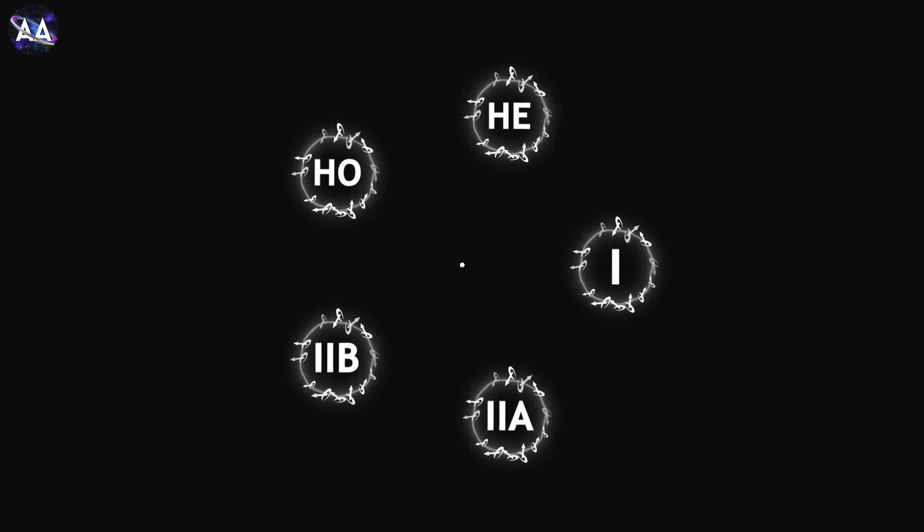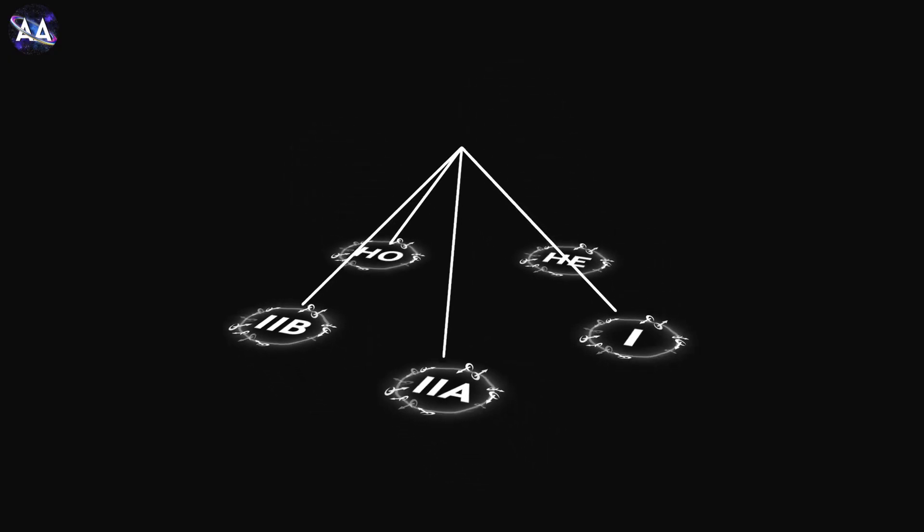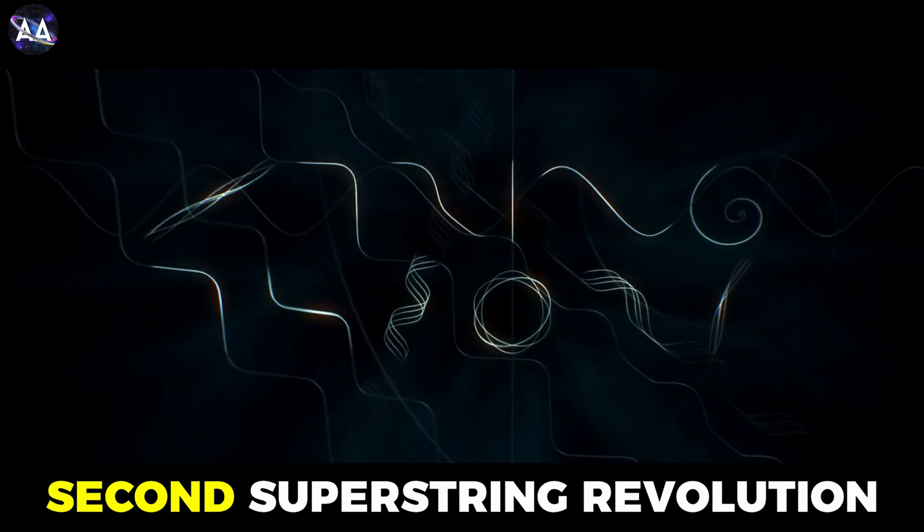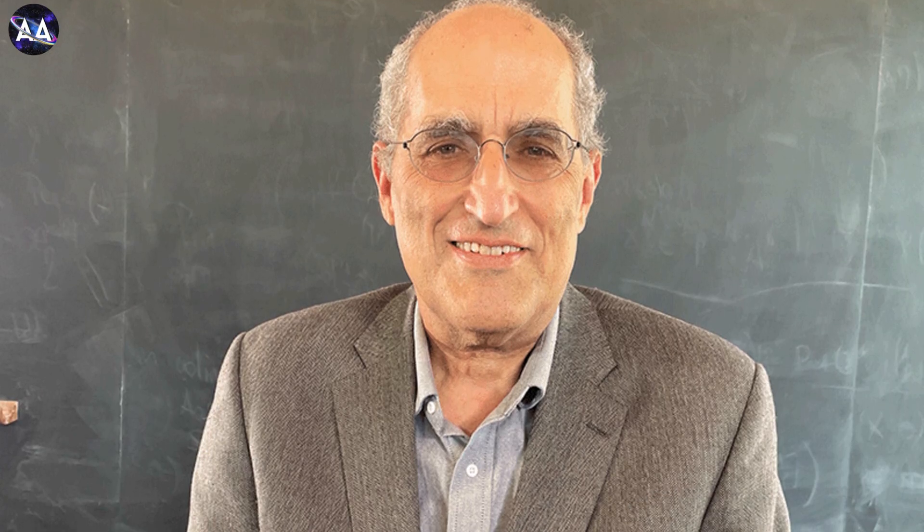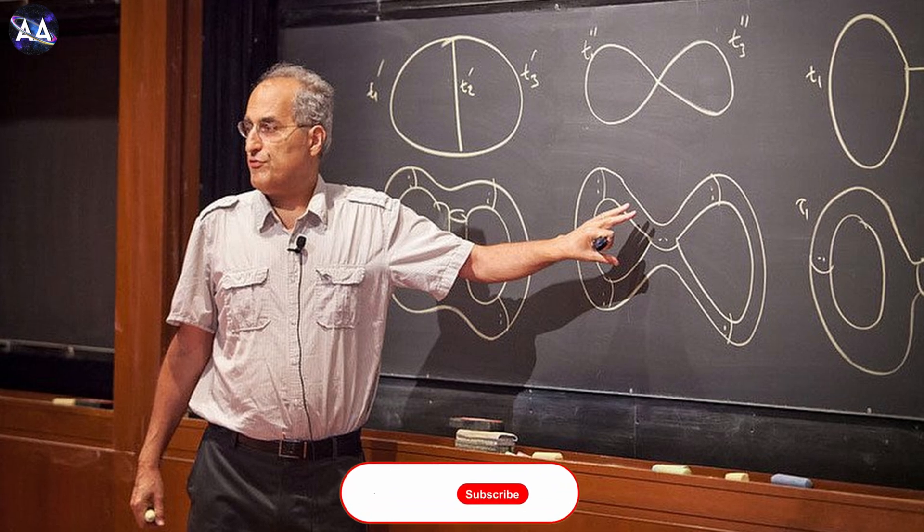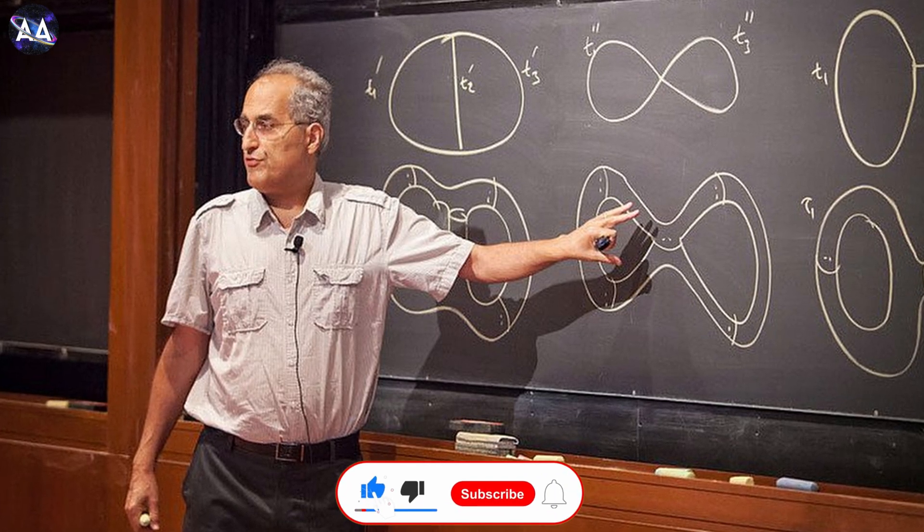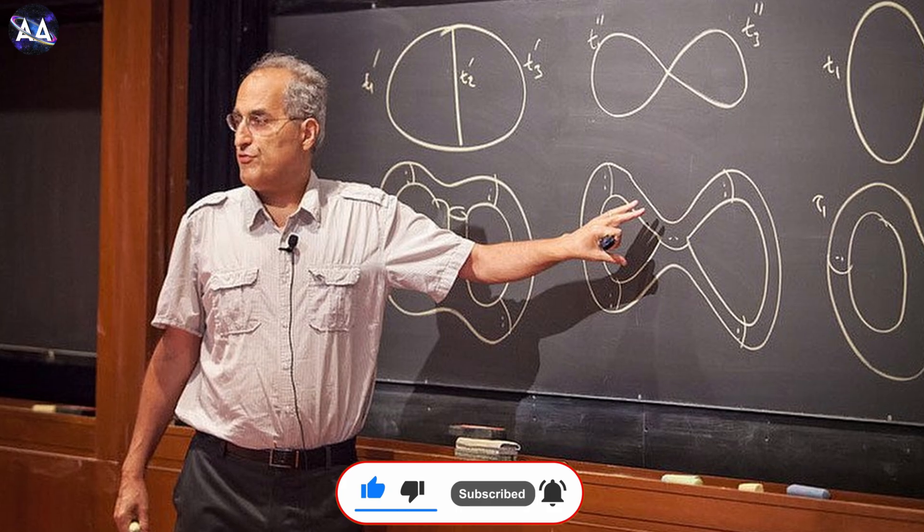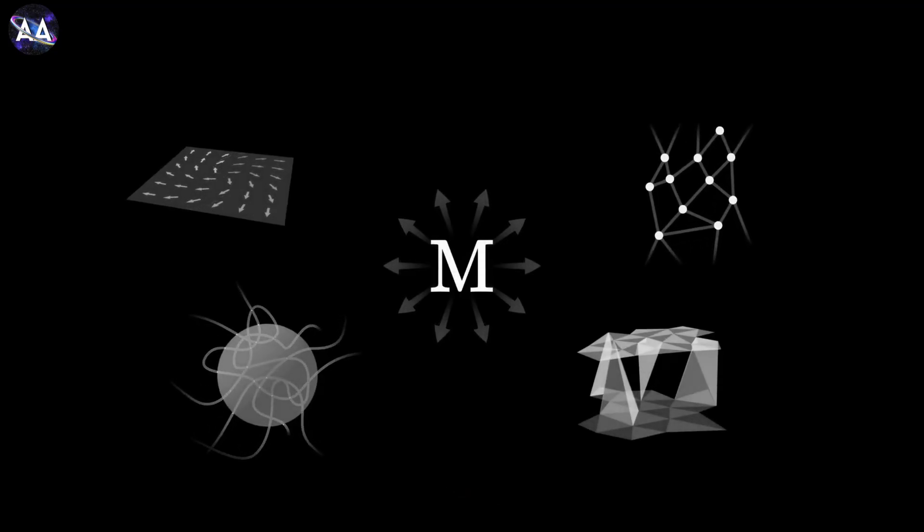This puzzle was solved in 1995, during what's now called the Second Superstring Revolution. Edward Witten, a brilliant theoretical physicist, proposed that these five theories were not separate, but different perspectives of a single, unified framework. He called it M-theory.